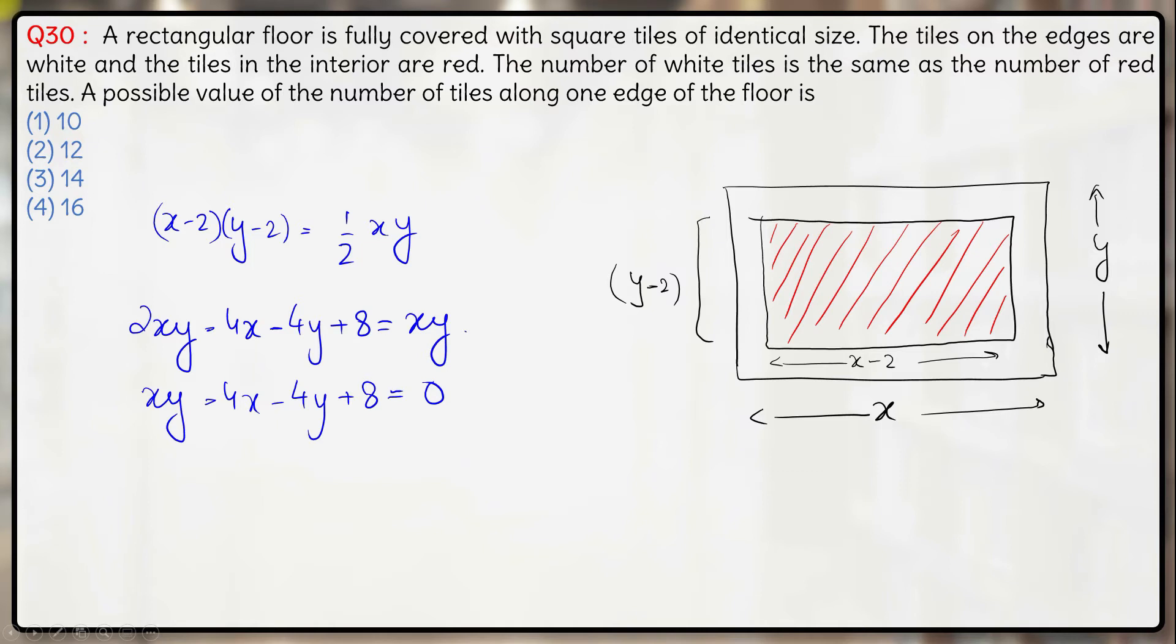So from here let's take x common out. So you'll have x times (y minus 4) is equal to 4y minus 8 here, hence x comes out to be (4y minus 8) upon (y minus 4).